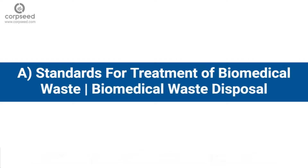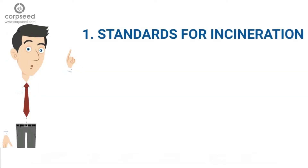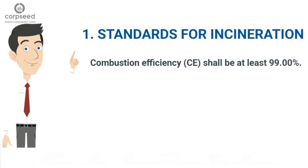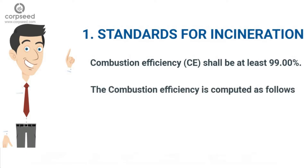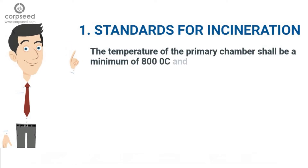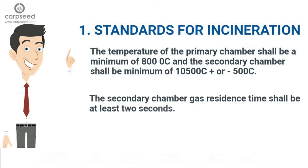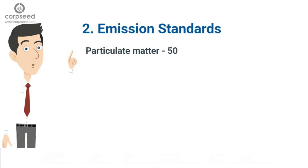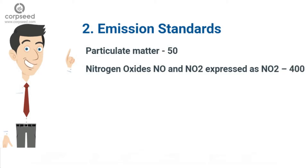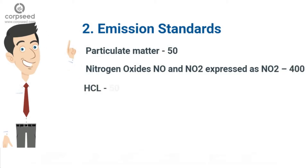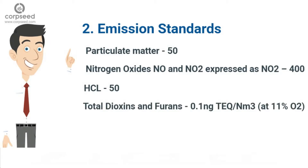Standards for treatment of biomedical waste — Incineration: All incinerators shall meet the following operating and emission standards. Combustion Efficiency (CE) shall be at least 99.00%. The temperature of the primary chamber shall be a minimum of 800°C and the secondary chamber a minimum of 1050°C ± 50°C. The secondary chamber gas residence time shall be at least 2 seconds. Emission standards: Particulate matter: 50; Nitrogen oxides (NO and NO2 expressed as NO2): 400; HCl: 50; Total dioxins and furans: 0.1 ng TEQ/Nm³ at 11% O2.